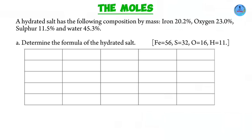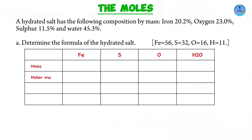Whenever you are asked such a question on determining the formula, you need a table with the elements involved: iron, sulfur, oxygen, and water going in as a block. The table will have columns for mass, molar mass, number of moles, and mole ratio. Next step: fill in the relevant details. The information provided is in percentage form, so imagine instead of 100% we have 100 grams, with iron being 20.2 grams, sulfur 11.5, oxygen 23, and water 45.3 grams.